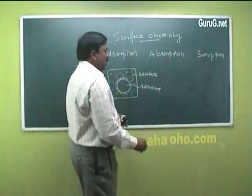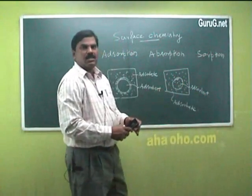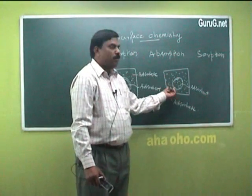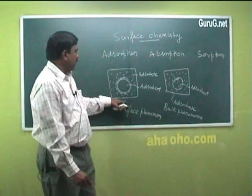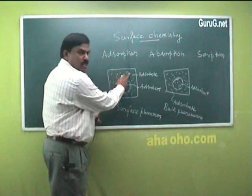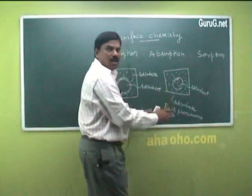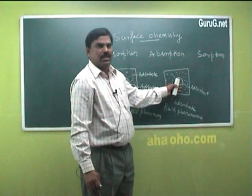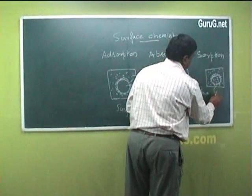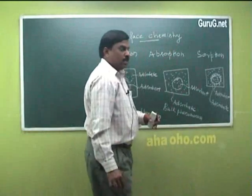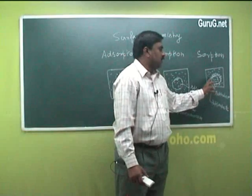What is absorption? In absorption, the adsorbate molecules are distributed uniformly throughout the adsorbent — it is a bulk phenomenon. In adsorption, only the surface of the adsorbent takes the adsorbate molecules. In absorption, the adsorbate molecules go inside and are distributed throughout the adsorbent. Sorption is nothing but both simultaneous adsorption and absorption — the adsorbate molecules are uniformly distributed into the adsorbent and also on the surface of the adsorbent.